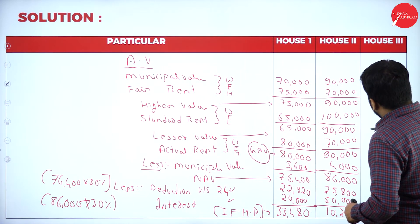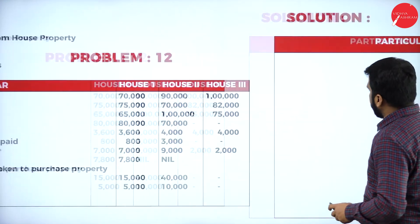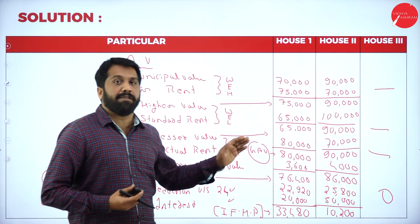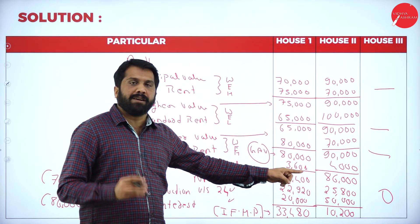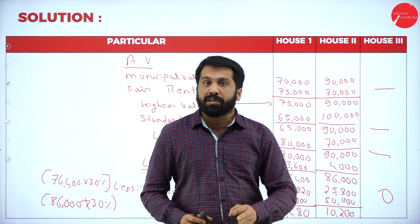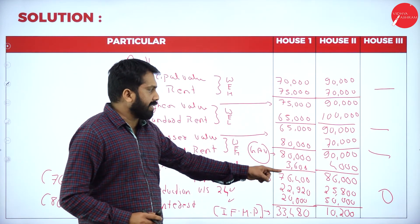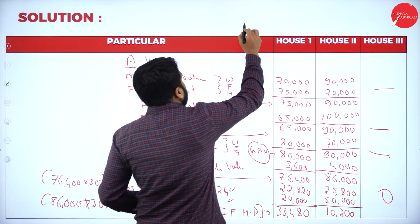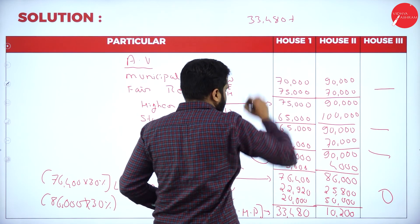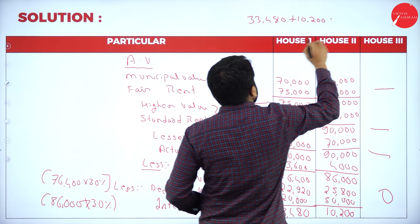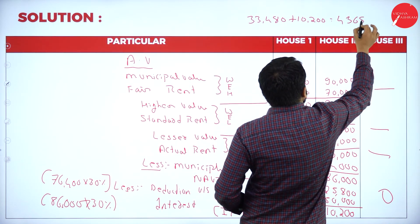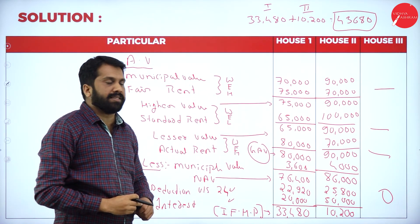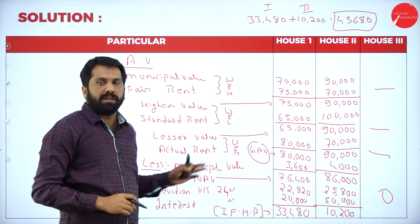For house three, it is used for own personal purpose and there is no interest — so it will be zero. For a house used for own purpose, you can only claim the interest part; other than interest, you are not supposed to take anything — even municipal tax paid should not be claimed. The total income from house property is 33,480 plus 10,200, which equals 43,680.